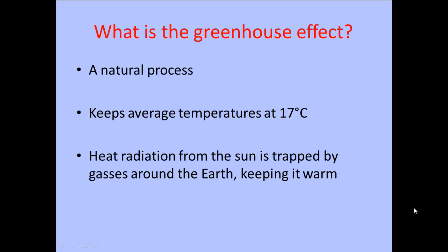The greenhouse effect is a completely natural process and it keeps the average temperature at relatively 17 degrees Celsius. It causes the absorption of heat radiation or infrared radiation, and that gets trapped by gases around the Earth, such as carbon dioxide and methane, hence raising the temperature.